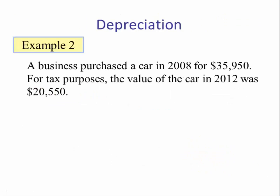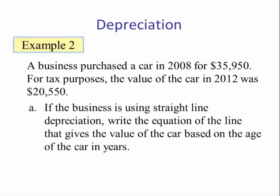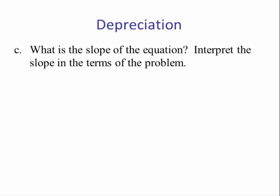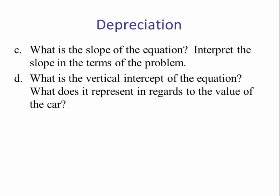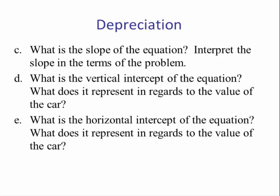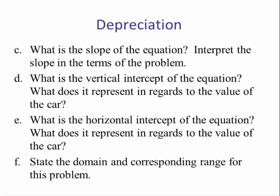Example 2: a business purchased a car in 2008 for $35,950. For tax purposes, the value of the car in 2012 was $20,550. A) If the business is using straight-line depreciation, write the equation of the line that gives the value of the car based on the age of the car in years. B) Graph the model. C) What is the slope? Interpret it. D) What is the vertical intercept and what does it mean? E) What is the horizontal intercept and what does it represent? F) State the domain and the corresponding range.